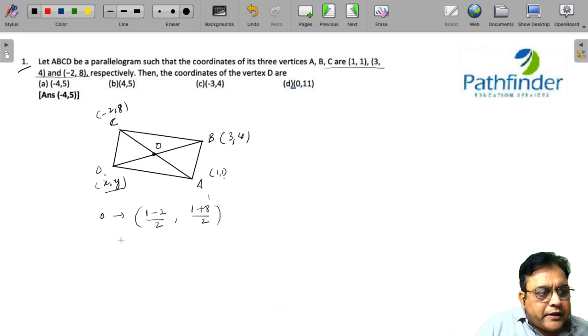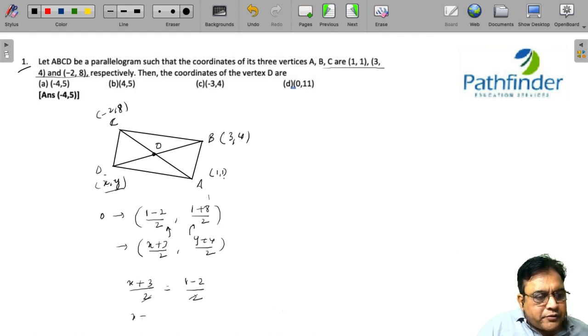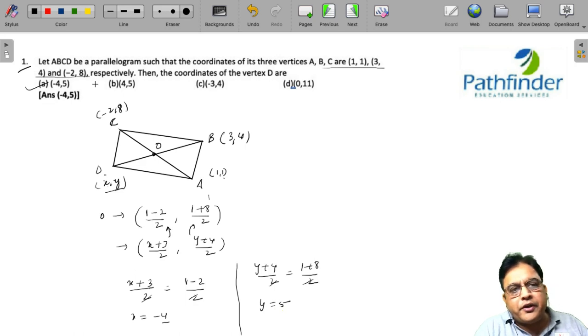And from BD the coordinates will also be equal to (x+3)/2 and (y+4)/2. So these two should be equal. We equate (x+3)/2 = (1-2)/2, so x must be equal to -4. There is only one option which has x = -4, but we can also find out (y+4)/2 = (1+8)/2, and we have y = 5. So (-4,5) should be your answer.